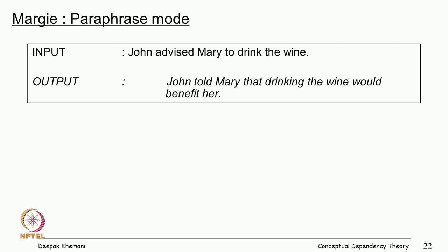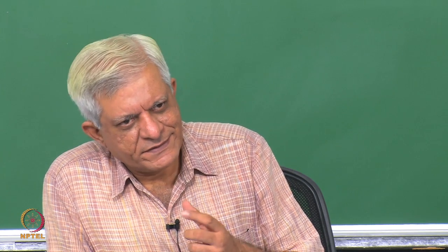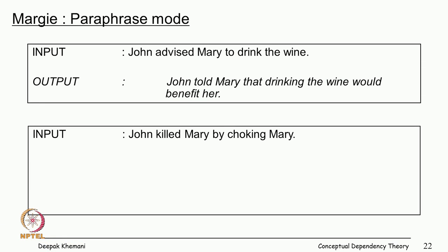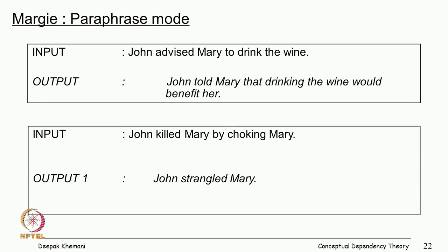For example, 'John advised Mary to drink the wine.' The program paraphrased it as 'John told Mary that drinking wine would benefit her.' We will see how the word 'advise' is represented in conceptual dependency. Similarly, 'John killed Mary by choking Mary' — a paraphrase could be 'John strangled Mary,' because the system understands that strangle means killing by choking. 'John choked Mary and she died because she could not breathe.' All this must be represented in the meaning of the word 'strangled' itself.